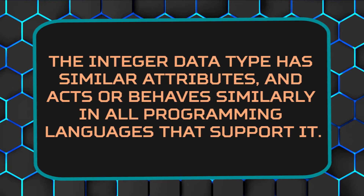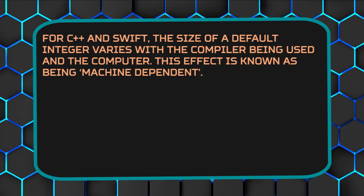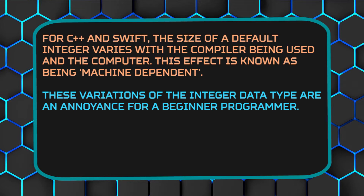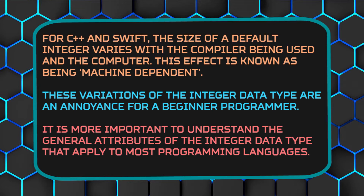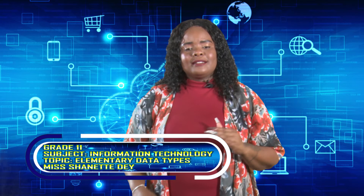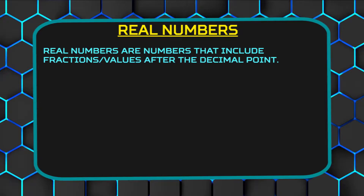The integer data type has similar attributes and behaves similarly in all programming languages that support it. For C++ and Swift, the size of a default integer varies with the compiler being used and the computer. This effect is known as being machine-dependent. These variations are an annoyance for a beginning programmer. It is important that they understand the general attributes of the integer data type that apply to most programming languages. An integer is not a fraction — it is a whole number.